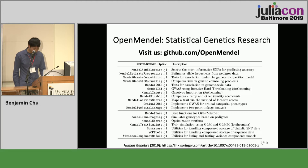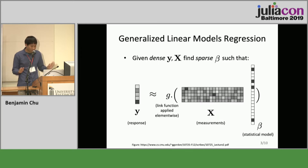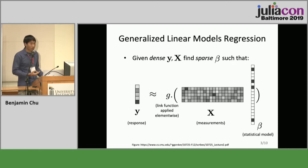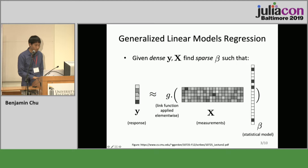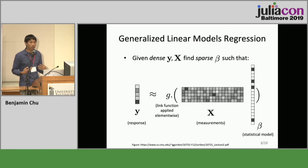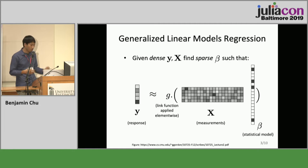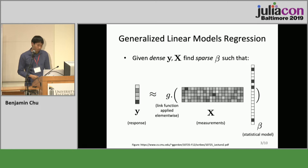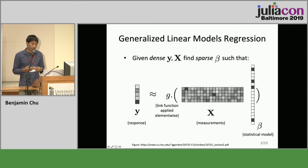Let's begin by introducing the problem my package solves: generalized linear model regression. In this setup you have a response vector — it can have any distribution, continuous, count data, or binary. Associated with it is a design matrix, and this design matrix is what we call high-dimensional, meaning it has more columns than rows. This is called over-determined in statistics, and the assumption is that even though there are a ton of columns, only a few of them are actually affecting the response.